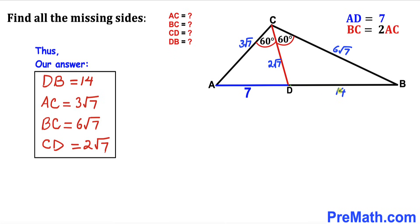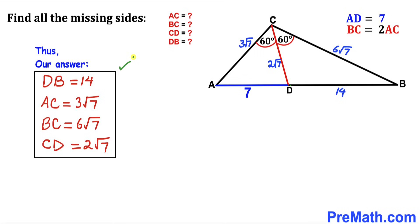Here are all the side lengths we found: AC = 3√7, BC = 6√7, DB = 14, and CD = 2√7. That's our final answer. Thanks for watching and please don't forget to subscribe for more exciting videos.